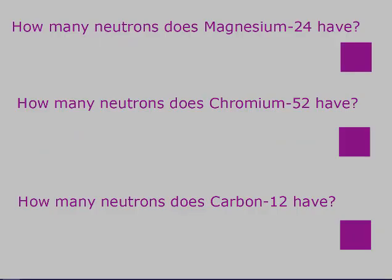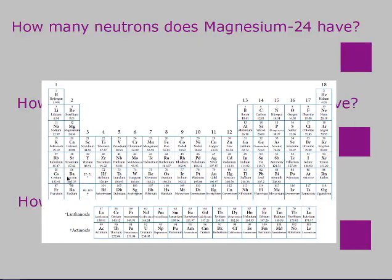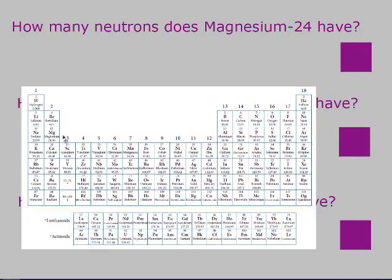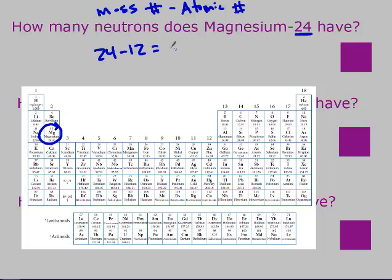One more example: how many neutrons does magnesium-24 have? Find magnesium on the periodic table — it has an atomic number of 12. Since the mass number 24 is given, use that. Mass number minus atomic number: 24 minus 12 gives 12 neutrons.